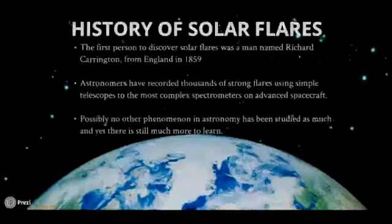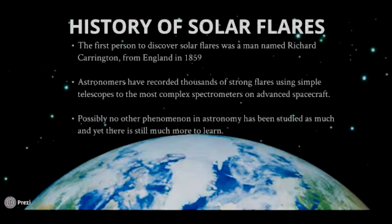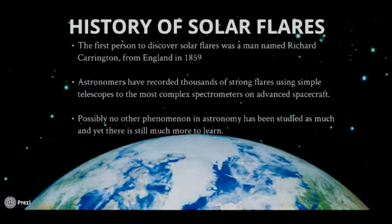According to the article 'The Secret Lives of Solar Flares,' the first person to discover solar flares was a man named Richard Carrington from England on the 1st of September 1859. Ever since then, astronomers have been recording thousands of strong flares using instruments ranging from simple telescopes in backyard observatories to the most complex spectrometers on advanced spacecraft. Possibly no other phenomenon in astronomy has been studied as much, and yet there is still much more to be learned about solar flares.